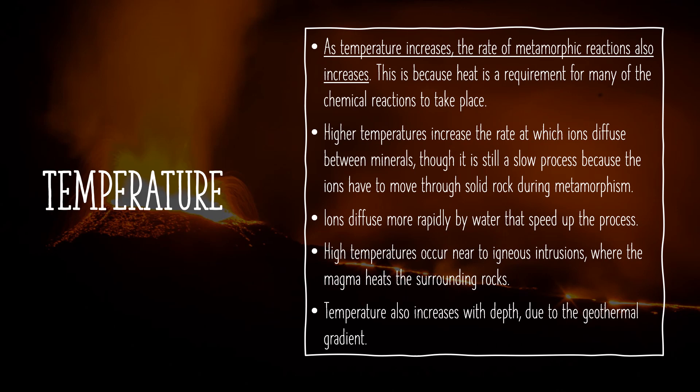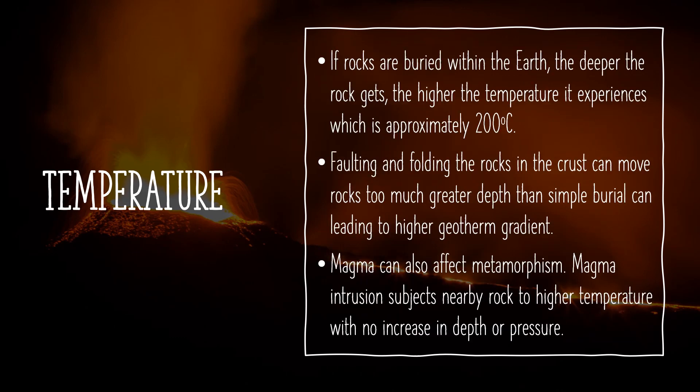Temperature also increases with depth due to the geothermal gradient. If rocks are buried within the earth, the deeper the rock gets, the higher the temperature it experiences, which is approximately 200 degrees Celsius. Faulting and folding rocks in the crust can move rocks to much greater depth than simple burial can, leading to higher geothermal gradient. Magma intrusion subjects nearby rock to higher temperature with no increase in depth or pressure.